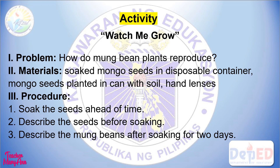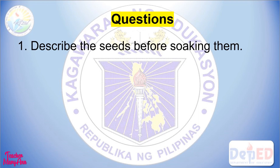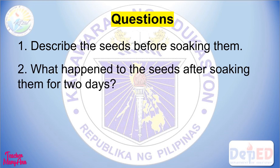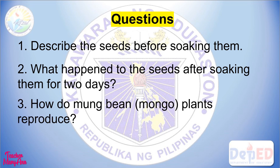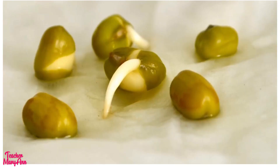The procedures: Number 1, soak the seeds ahead of time. Number 2, describe the seeds before soaking. Number 3, describe the mung beans after soaking for 2 days. Number 4, how do mung bean or munggo plants reproduce? Show your drawings of their mode of reproduction. Now let's watch closely at this video on how munggo seed and other flowering plants reproduce.